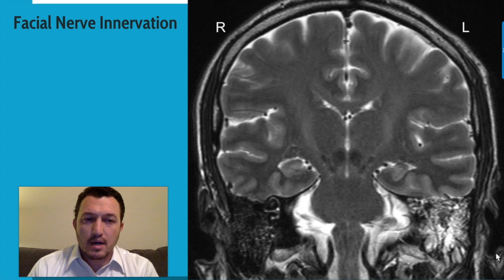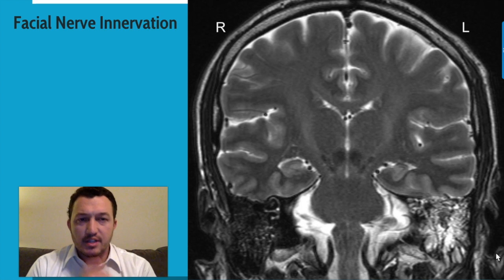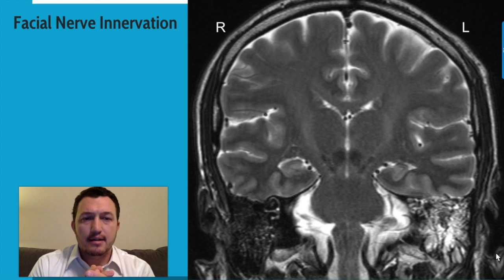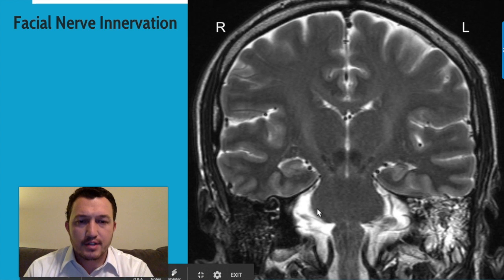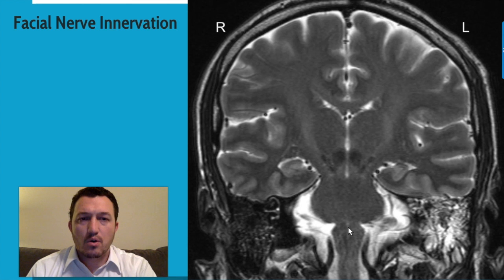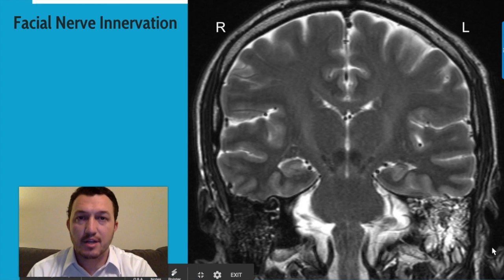To illustrate this I'm going to use this MR image. As you can see, we can see the cerebral cortex, the temporal lobes there on the bottom, you can see the pons, the medulla. With this coronal slice of an MR, let's go ahead and explain and illustrate where the anatomy of the facial nerve lies within this image.